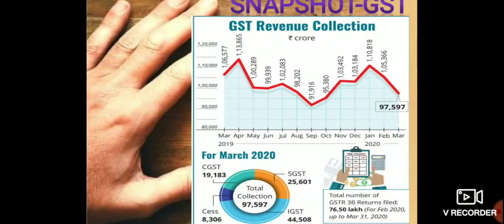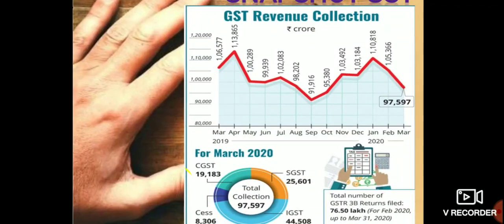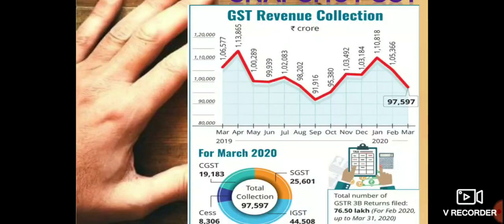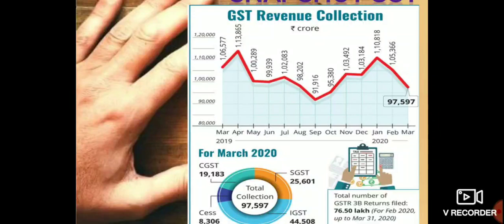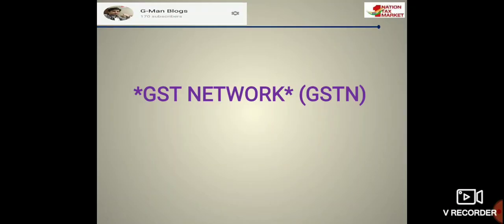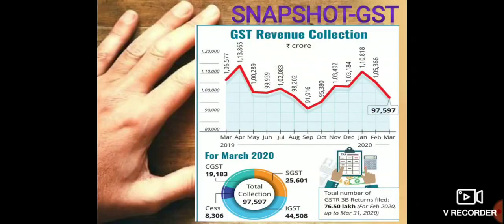There is also another piece of information I want to share: the total number of GST GSTR-3B returns filed was 76.50 lakh for February 2020, up to March 31st, 2020. That is the snapshot I want to share with you.